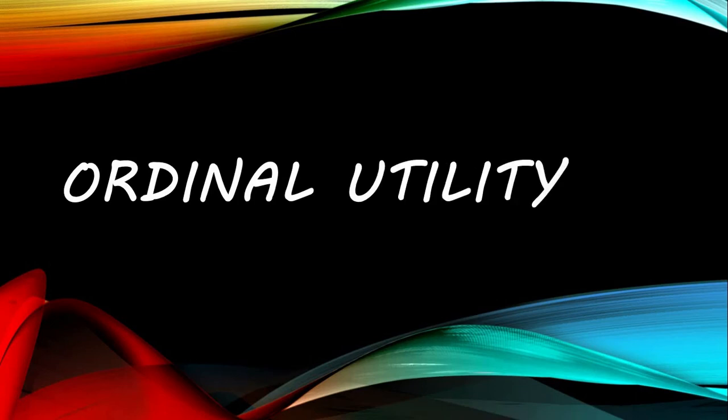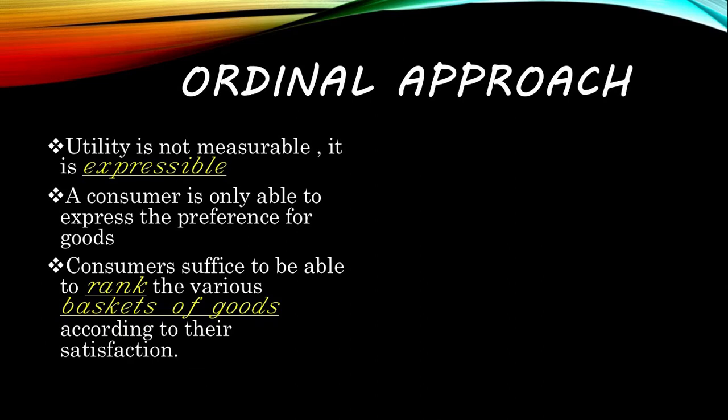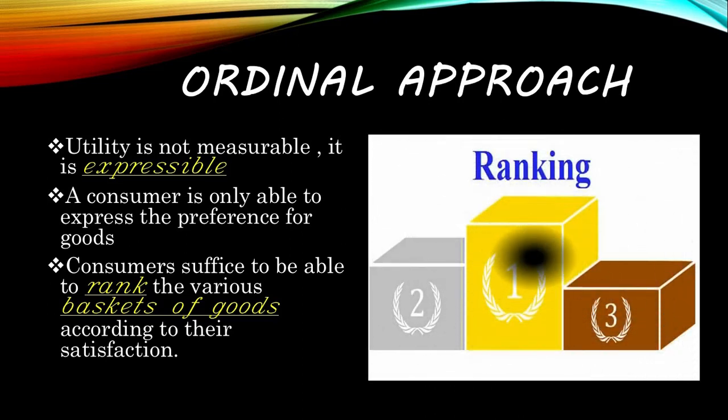The second approach is the ordinal approach, or ordinal utility. Opposing the classical economists' cardinal approach, modern economists claim that absolute measurement of utility is never possible. According to these economists, utility is a subjective phenomenon — it is not measurable, it is just expressible. So utility can be expressed in terms of rank.